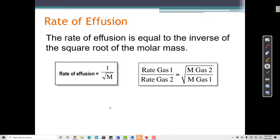We can calculate the rate of effusion as being equal to the inverse of the square root of the molar mass. So if I know the molar mass, for example helium, then helium has a molar mass of 4. The square root of 4 is 2, so the rate of effusion is 1 over 2 for helium.